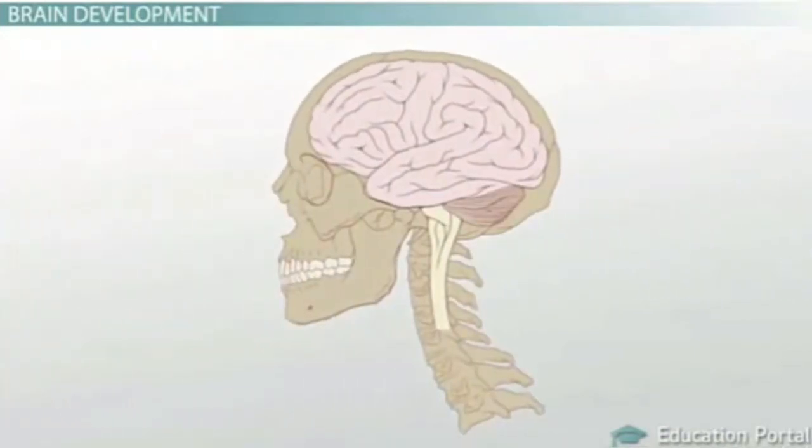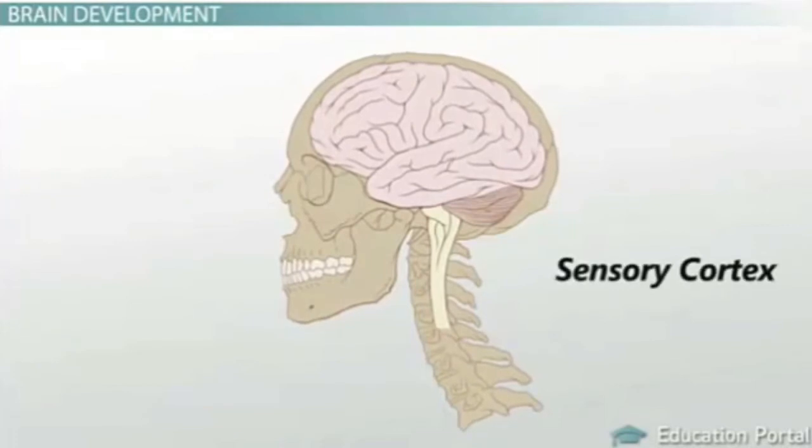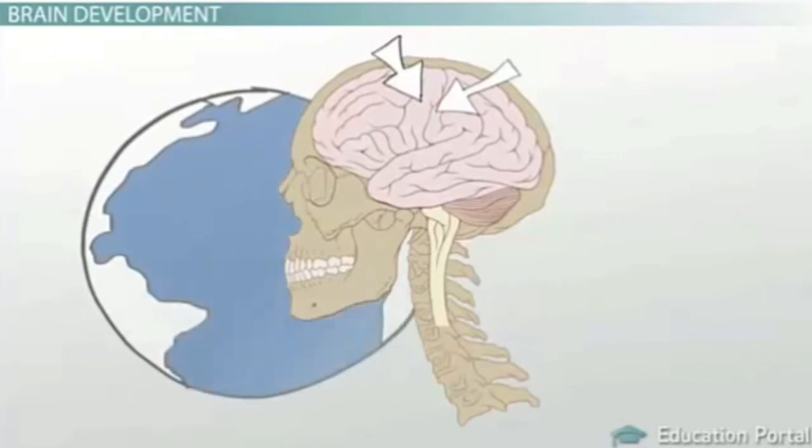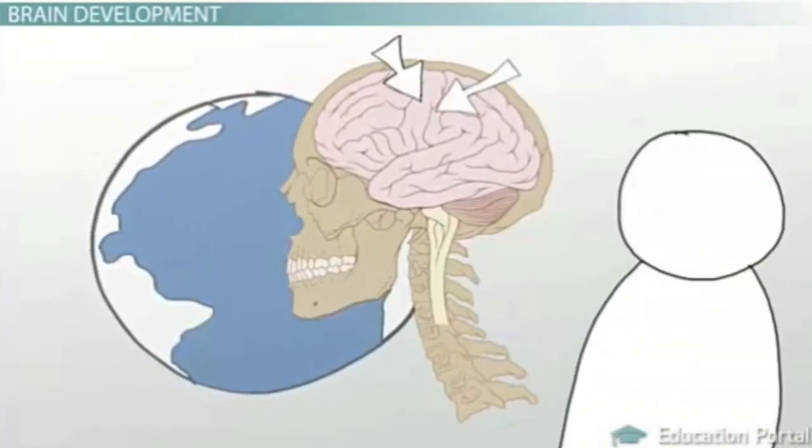Two parts of the brain that develop and become better and better at their jobs are the sensory cortex and the motor cortex. These two areas of the brain are in charge of how we interact with the world around us.